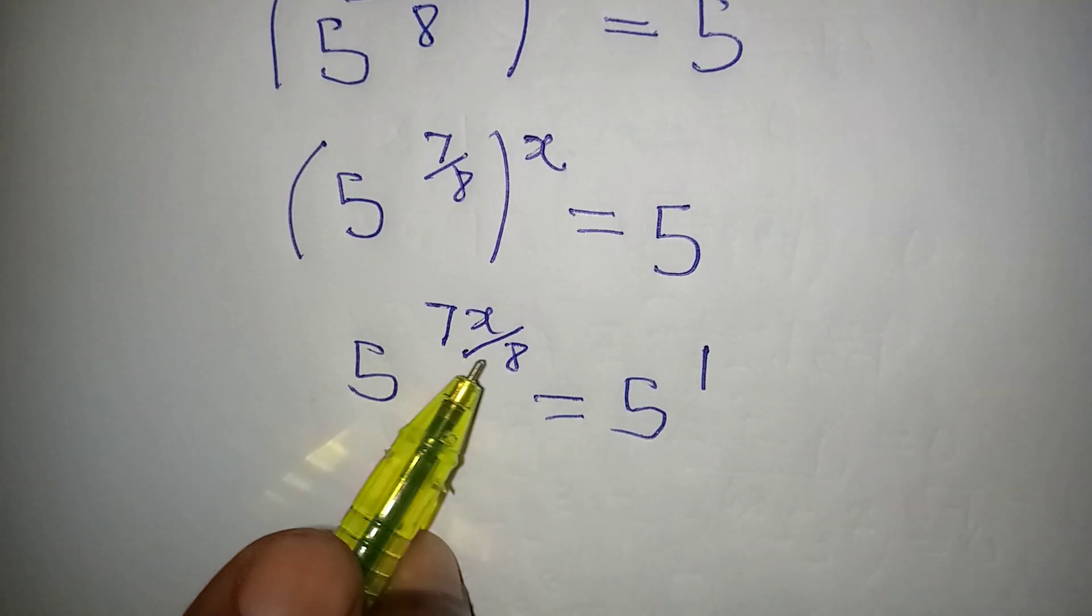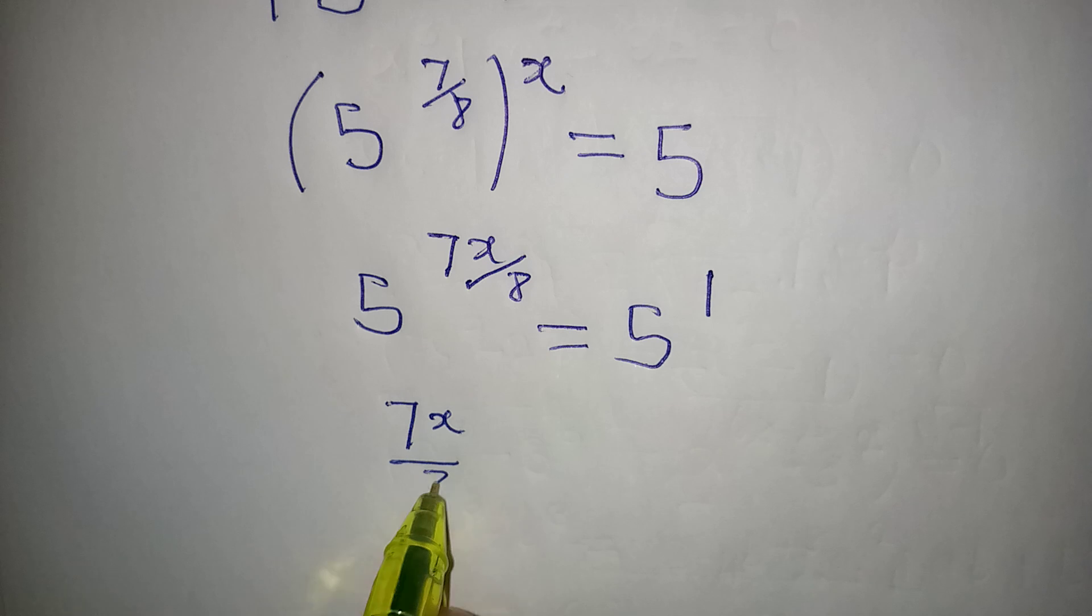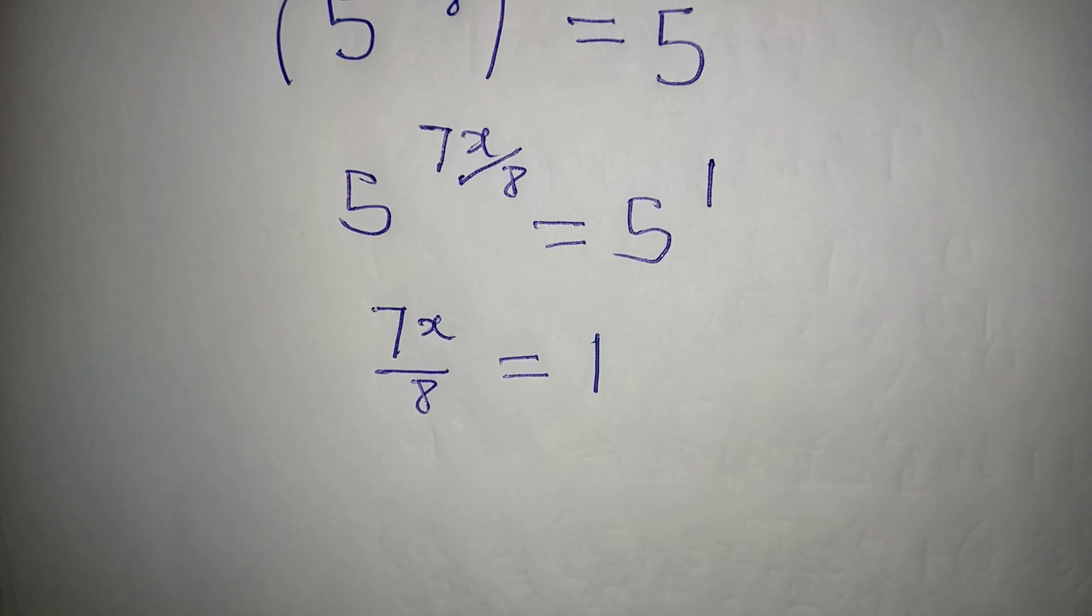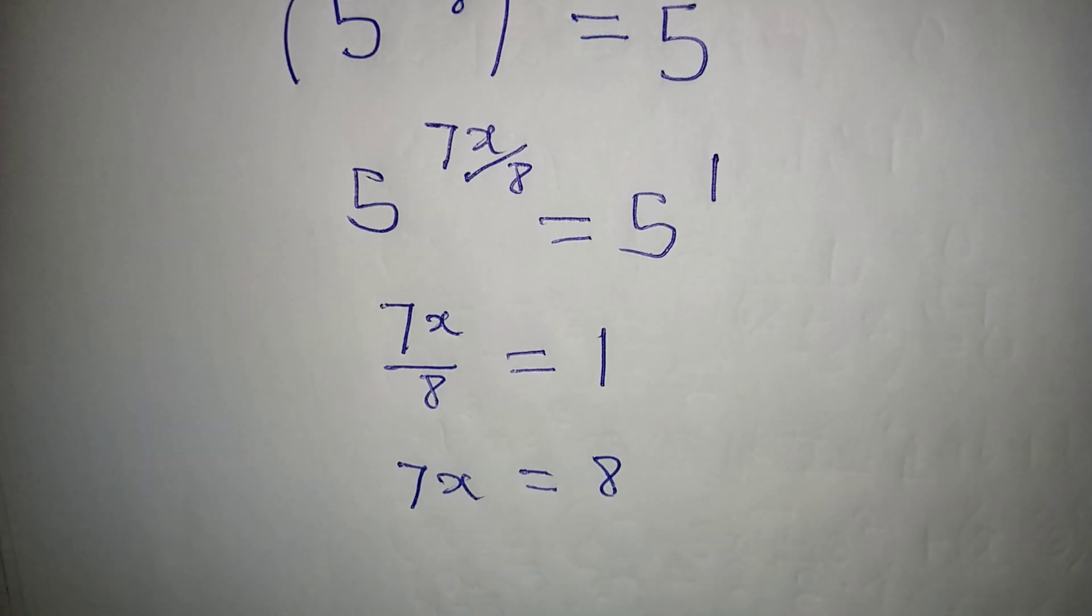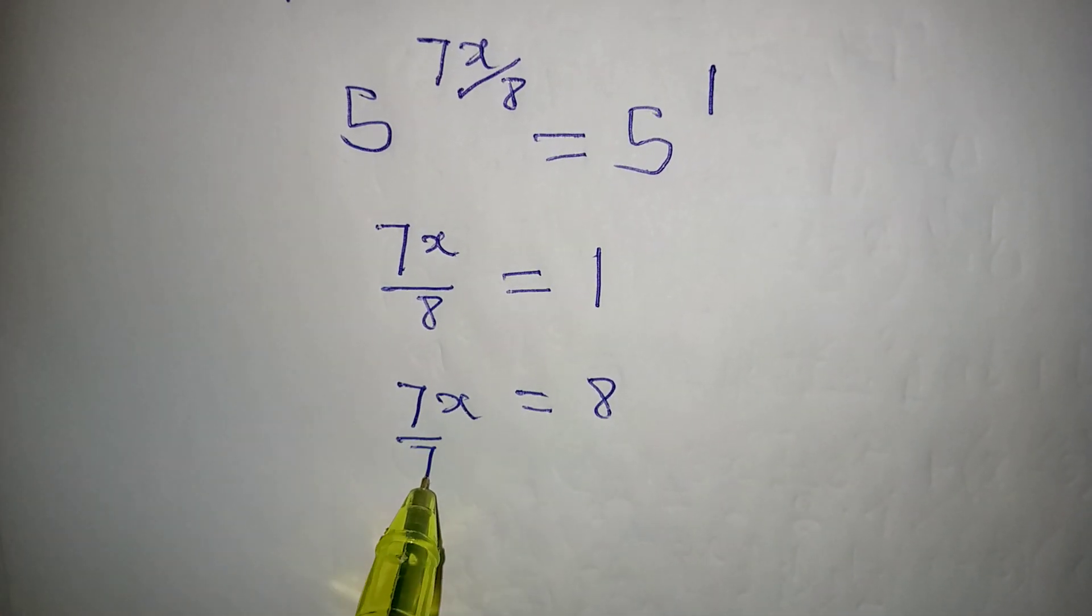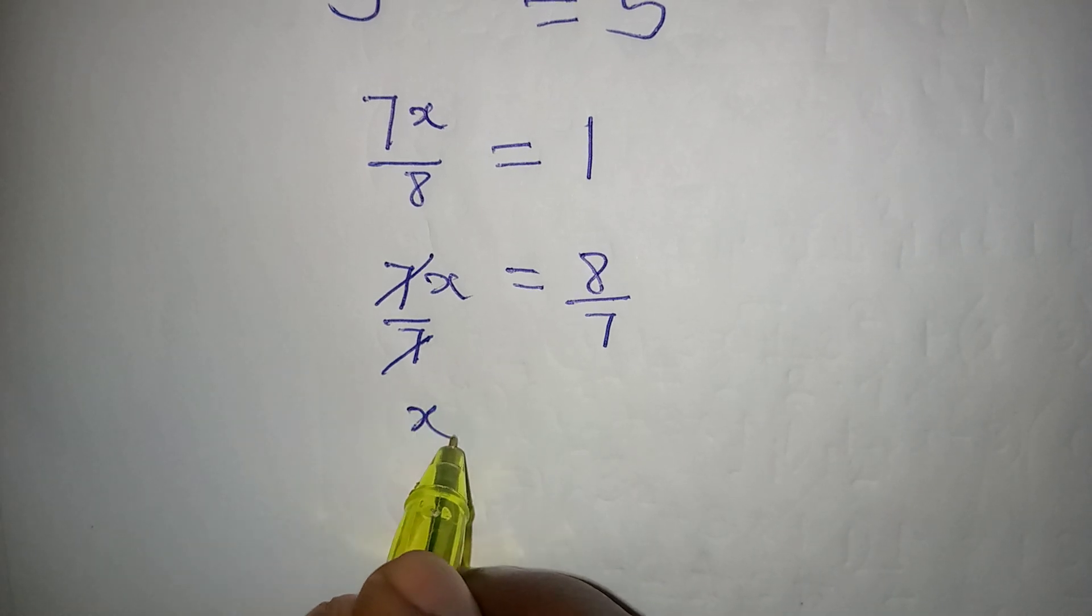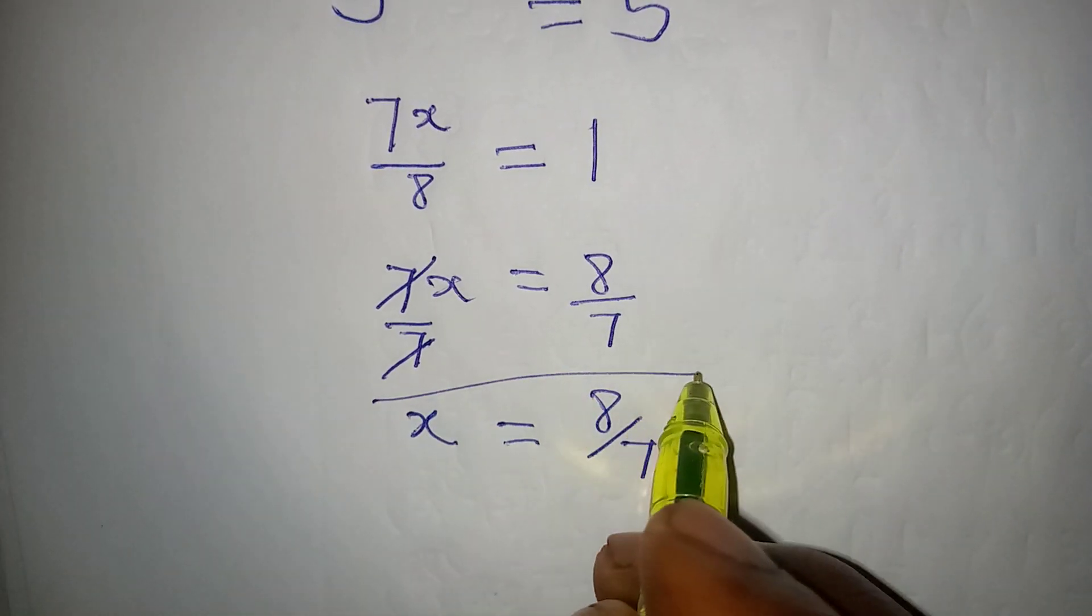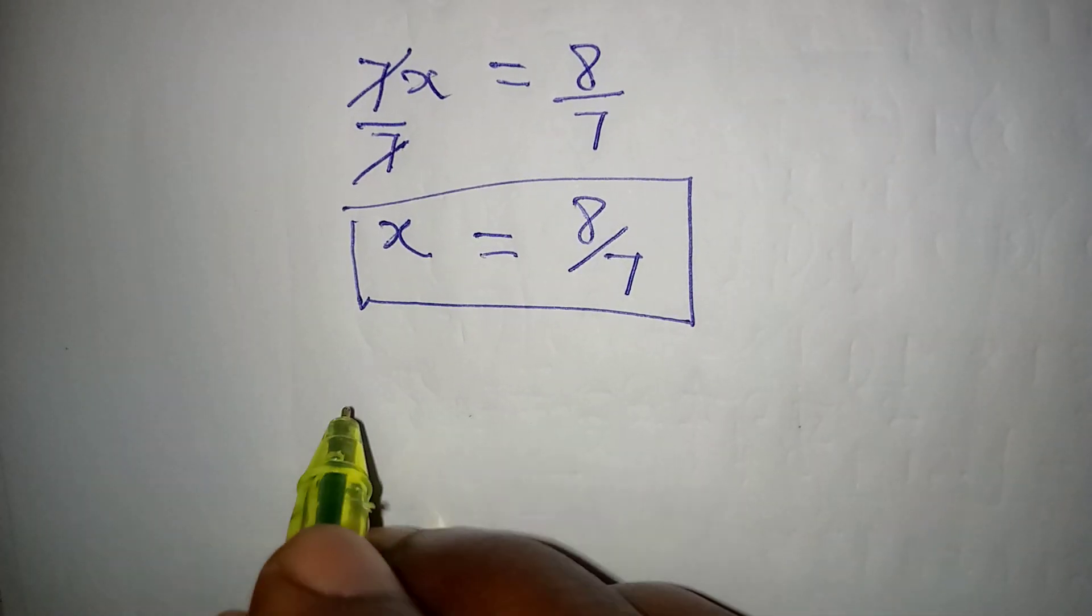Meaning that 7x over 8 should be equal to 1. And if that is the case we can cross multiply so that 7x will be equal to 8, and we can equally divide both sides by the coefficient of x which is 7. Then divide this by 7, this goes into this, and then we have x to be equal to 8 over 7.